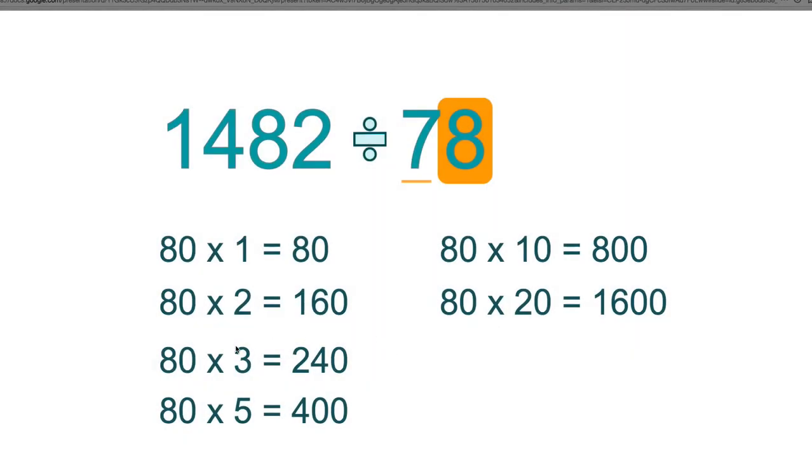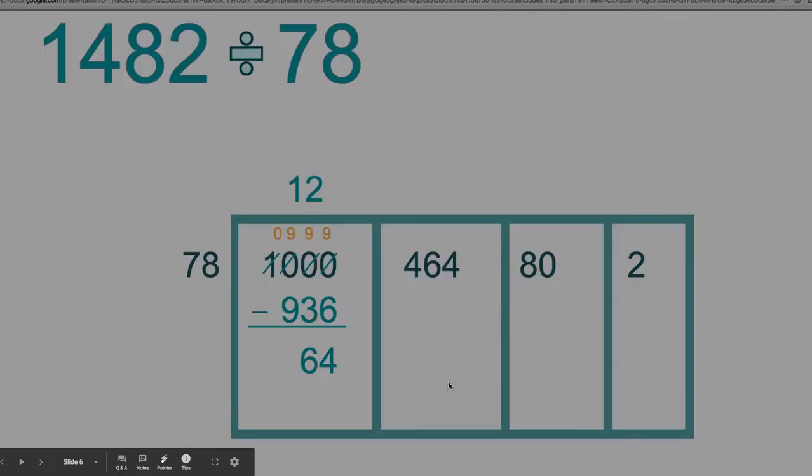Alright. So let's go back. So 80 times 5 looks pretty good. I wonder about 80 times 6. Well, I could do 2 3s twice, right? So 240 plus 240 would be 480, right? So that would be 480. That would be too big. So let's use the 5.